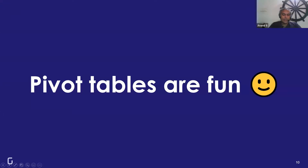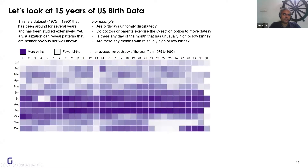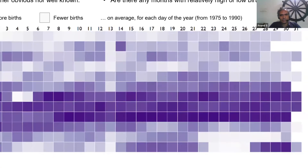Pivot tables is something you've probably learned. Let's talk about what we can do with pivot tables. We took birth data and asked: in the US, when are people born? We pivoted by month of birth and date of birth and counted the number of children born on a particular date, using Excel's conditional formatting.